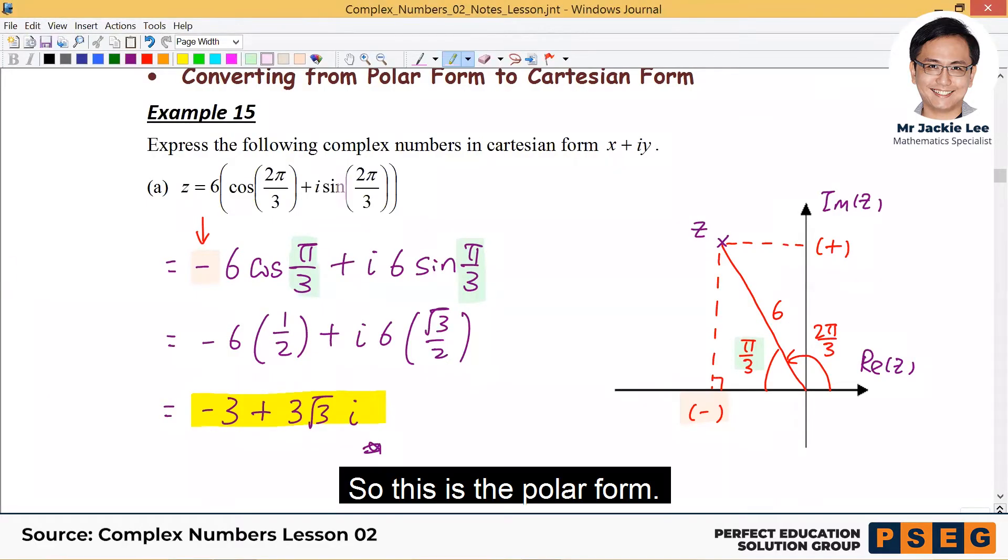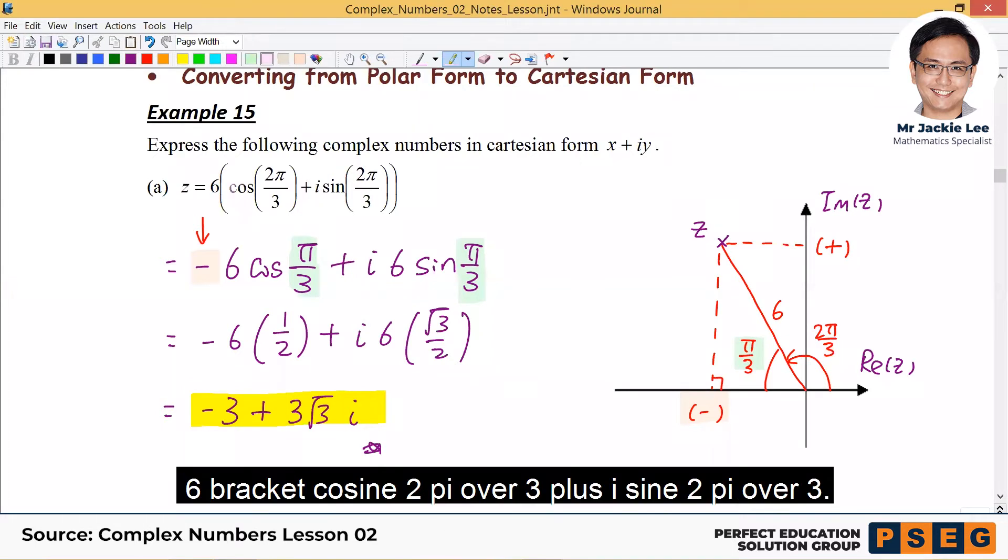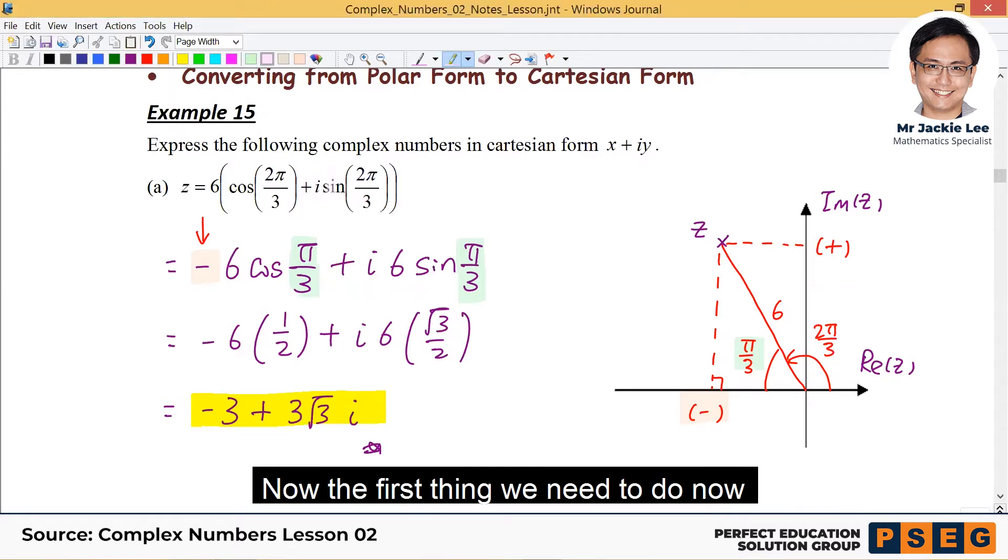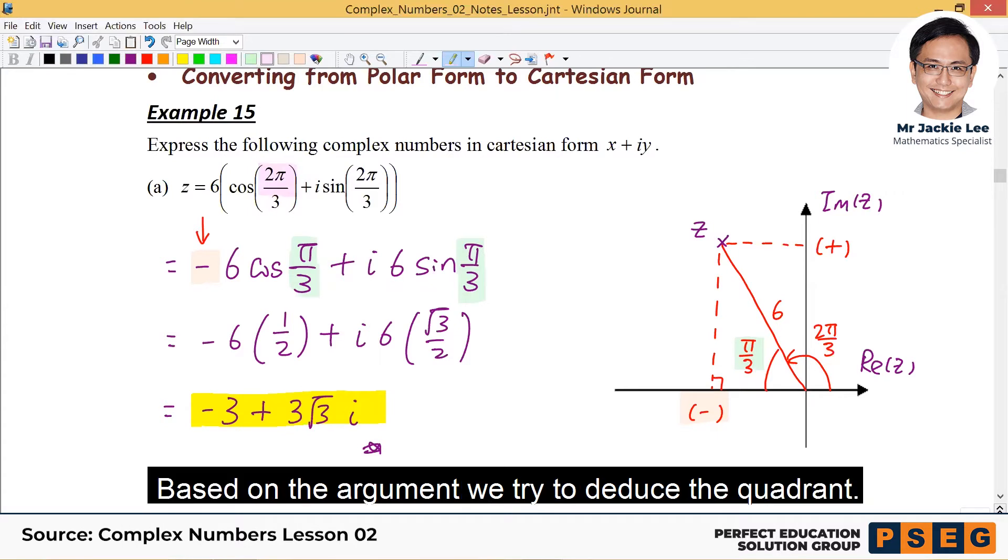Now, this is the polar form, 6 bracket cos(2π/3) plus i sin(2π/3). Now, the first thing we need to do is to check out the argument first. Based on the argument, we try to deduce the quadrant.